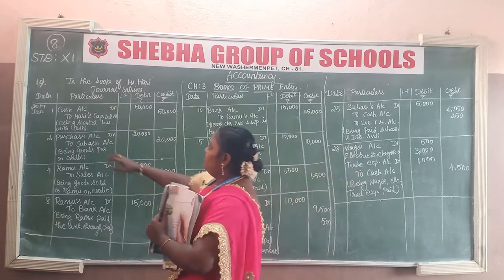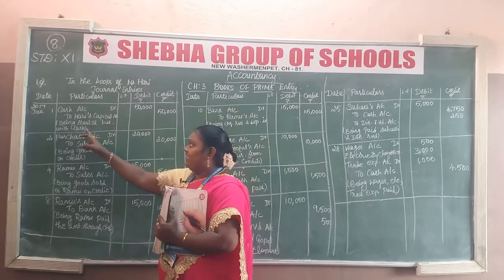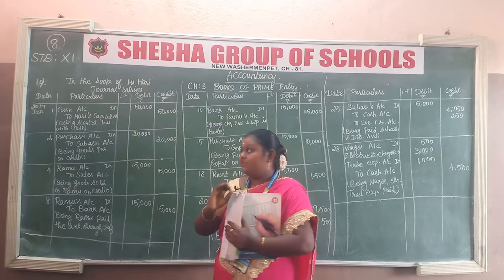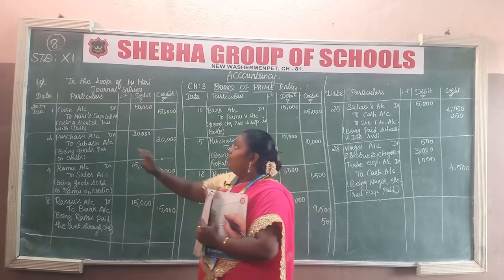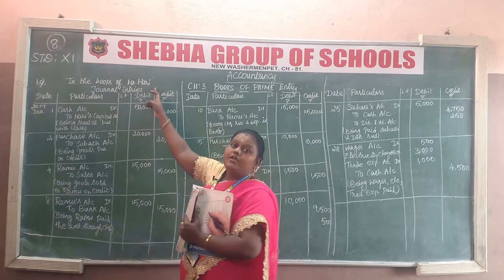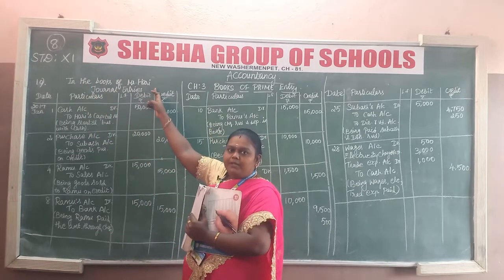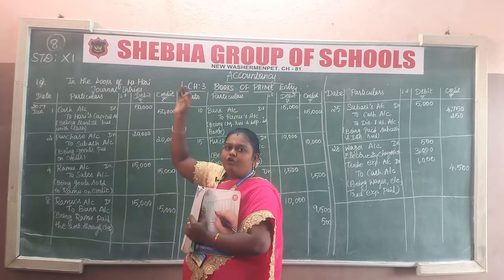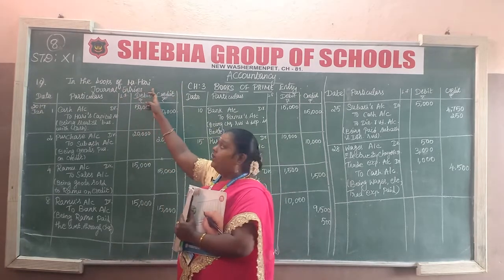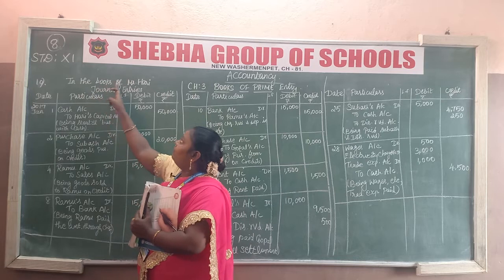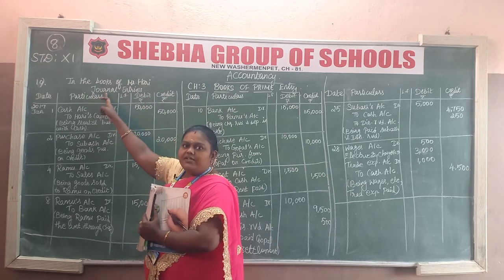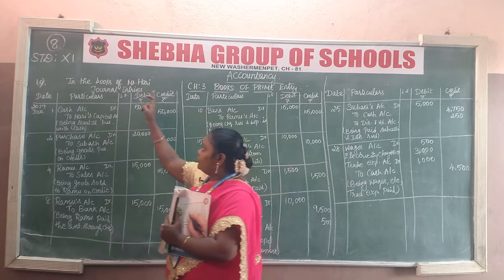First transaction: started business with cash. Business is started with cash. You must first write the name of the account holder — in the books of Mr. Harry. The next step is to pass the journal entry, so you need to write it as journal entries.